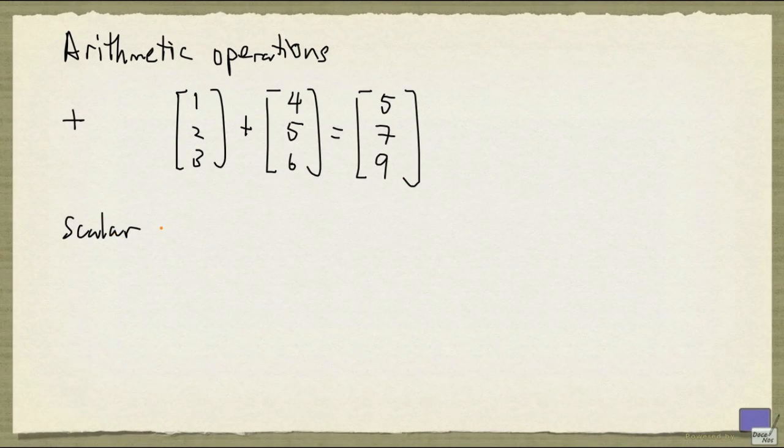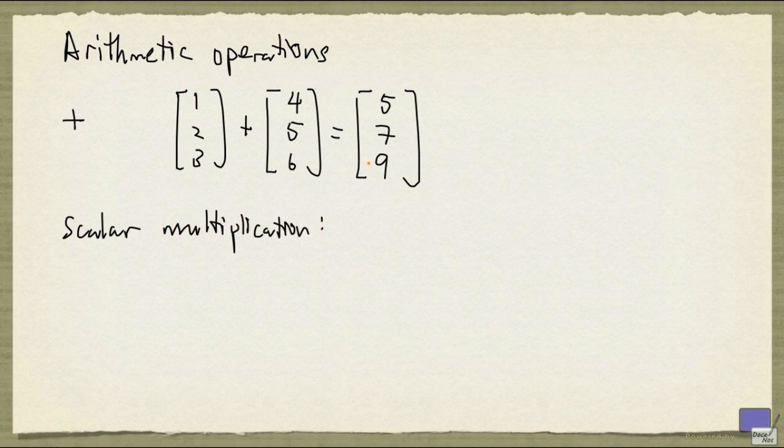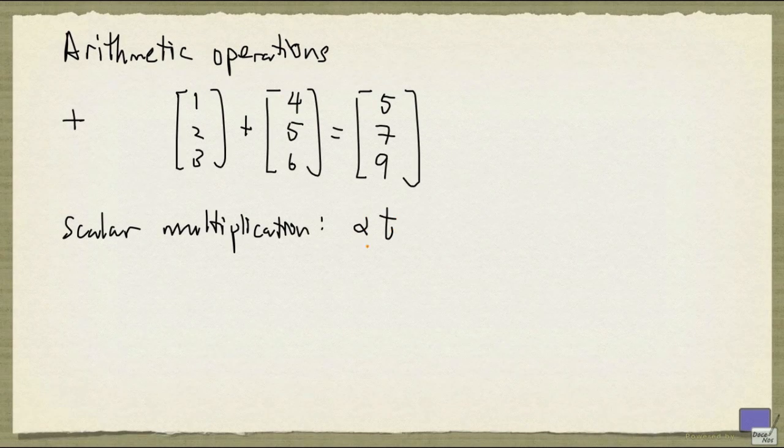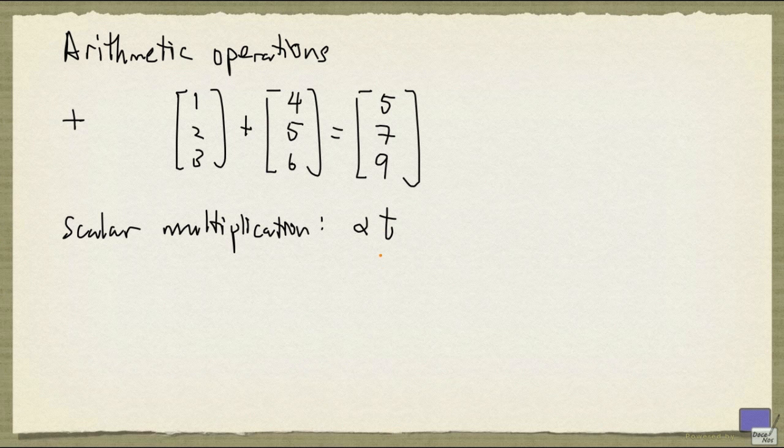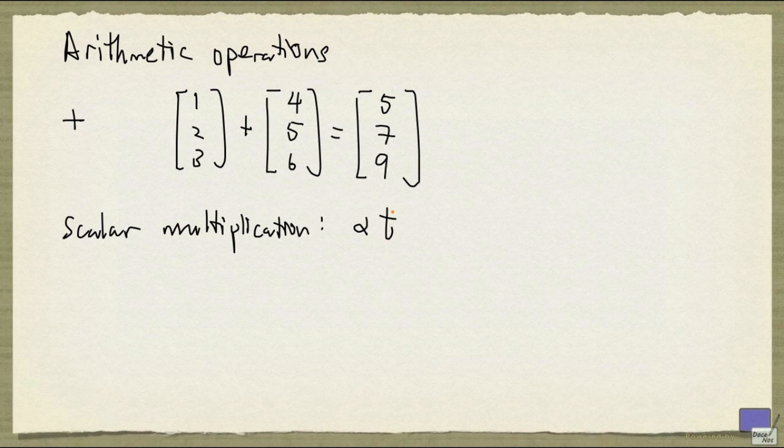Now there's the operation of scalar multiplication, and it has the form alpha times t, where alpha is a number and t is a tuple. In this case, the result is going to be a tuple having precisely the entries in t, but multiplied by alpha.